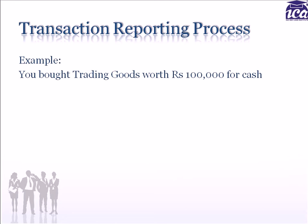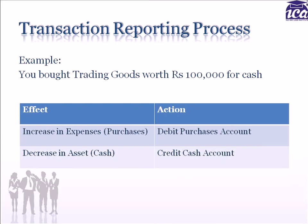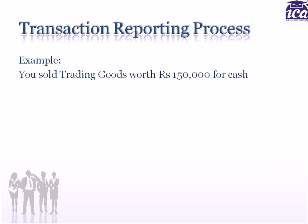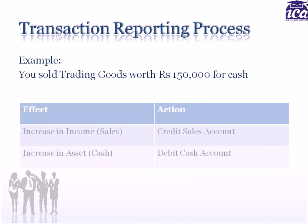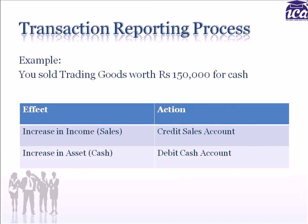You bought trading goods worth rupees 100,000. Debit expenses — in the case of a nominal account, debit purchases. And credit what goes out — in the case of a real account, credit cash. Now, let's say you made a sale worth rupees 150,000 for cash. Cash comes in, so you debit the cash account. And you credit incomes and gains — so you credit the sales account. Easy, isn't it?